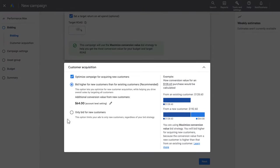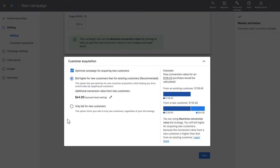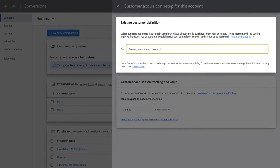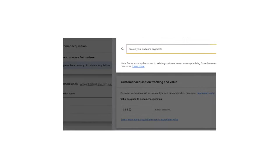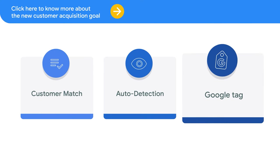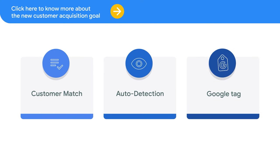If you choose the New Customer Value mode, follow these steps. Step 1: Select existing customer lists representing existing customers through Customer Match. You can define existing customers through Customer Match and the Google Tag. Both of these data sources will enable you to be more accurate in detecting new customers and are durable for privacy changes. You will also be automatically enrolled in Auto Detection if you are tracking purchase conversions in your Google Ads account.